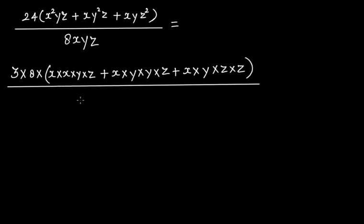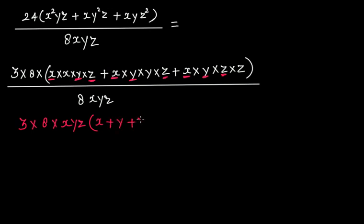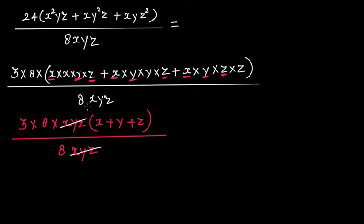And here you have 8xyz. Now x, x, x — y, y, y — z, z, z are common in all terms. Take them out: you get 3 × 8 × xyz × (x + y + z). This uses the distributive property of multiplication over addition. The denominator is 8xyz, so 8xyz cancels with 8xyz, and 8 cancels with 8. You have 3(x + y + z) as the answer.